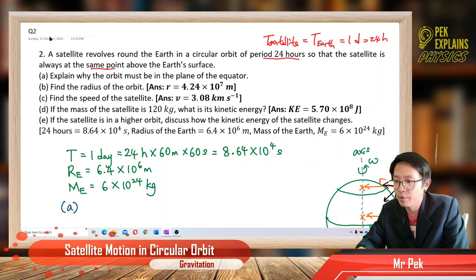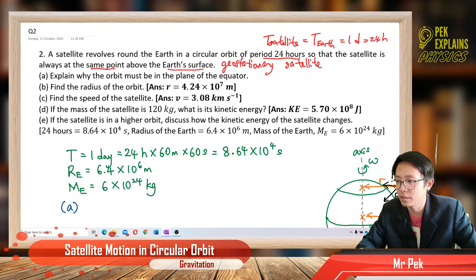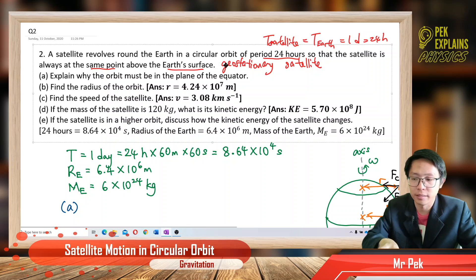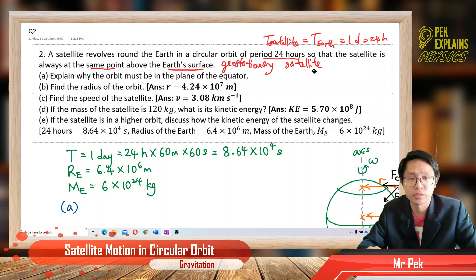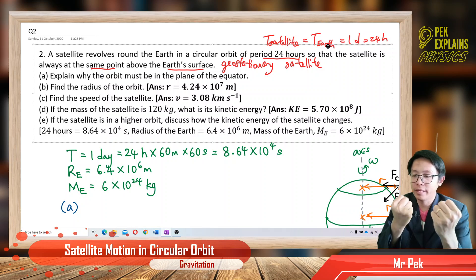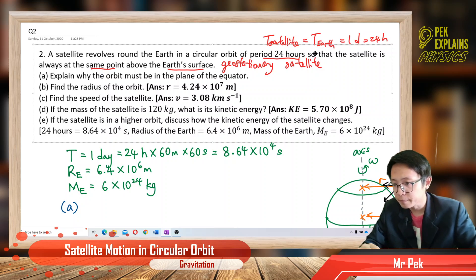So that it's always at the same point above the earth's surface — this is what we call a geostationary satellite. A geostationary satellite always remains above the same geographic point on the earth's surface. This is because the satellite and the earth share the same period of one day.